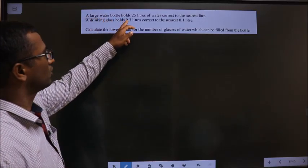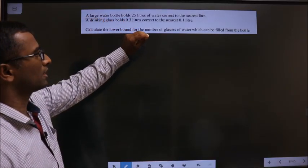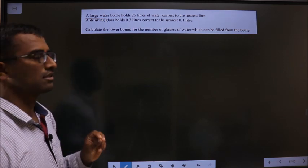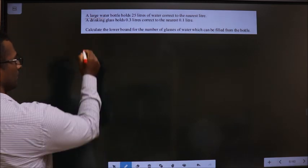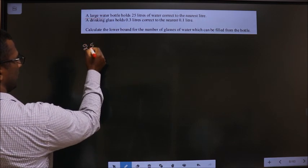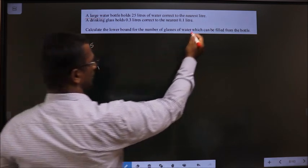A large water bottle holds 25 liters of water, correct to the nearest liter. Let us write the upper and lower bounds for 25. It is correct to the nearest liter.